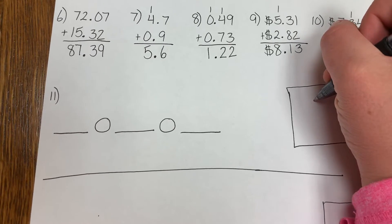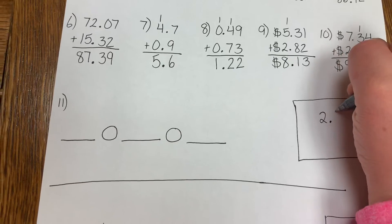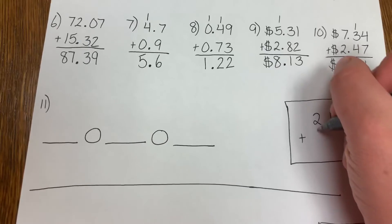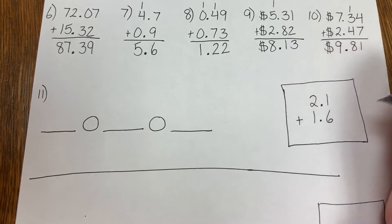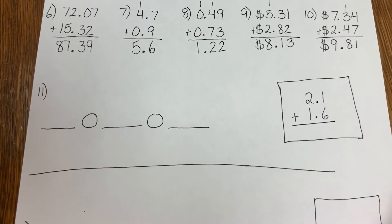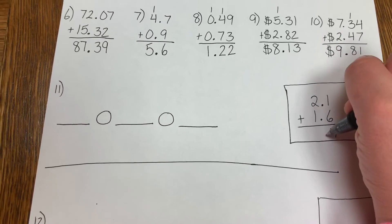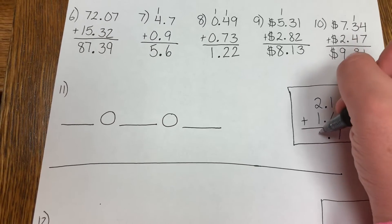So on the first day he hiked 2.1 miles. Plus, on the second day, 1.6 miles. Okay, set that up. 1 plus 6 is 7. Bring down your decimal. 2 plus 1 is 3.